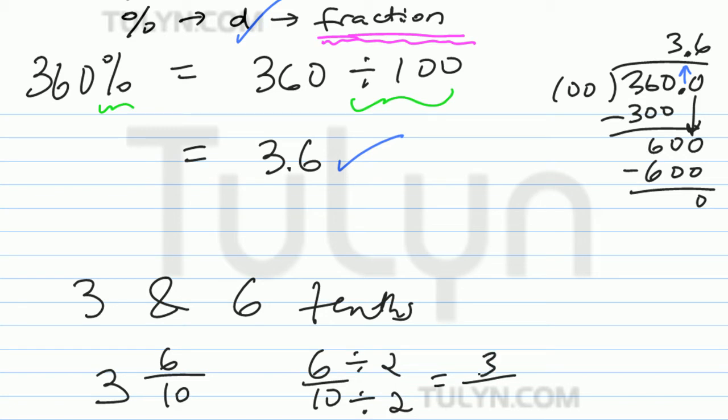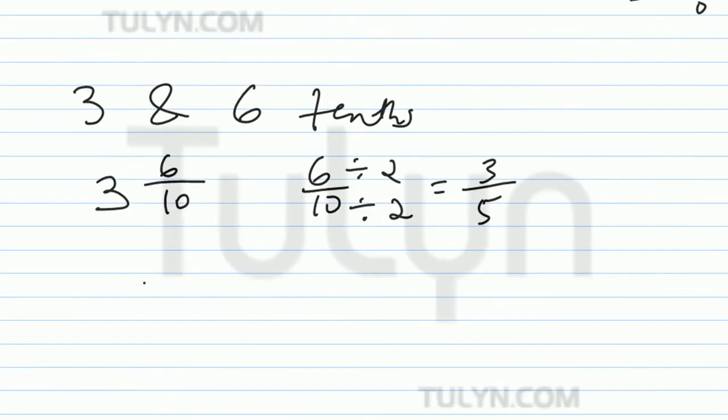6 divided by 2 is 3. 10 divided by 2 is 5. So then the final answer is not 3 and 6 tenths, but 3 and 3 fifths. Notice how I leave it as 3 and 3 fifths and not 3 and 6 tenths because 6 tenths is not in simplest form.